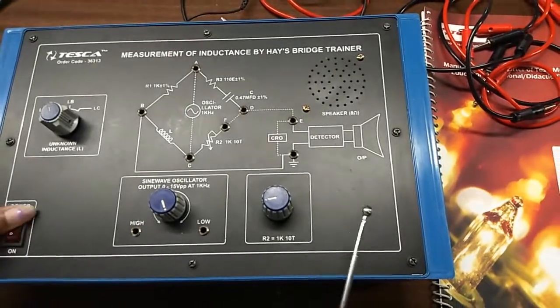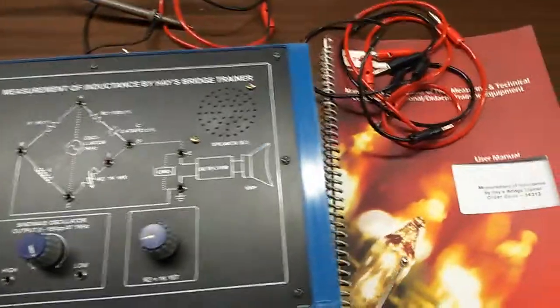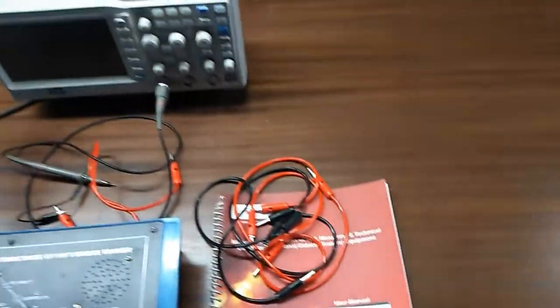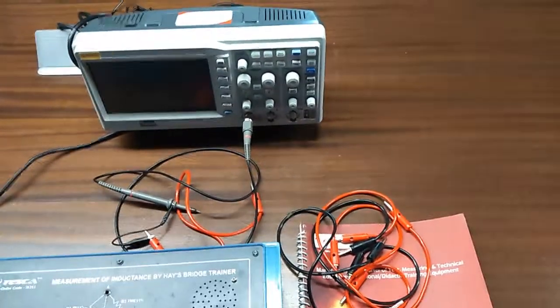This is the main switch to turn on or off the kit. The manual and patch cords are included in this kit. Here the use of CRO is optional.